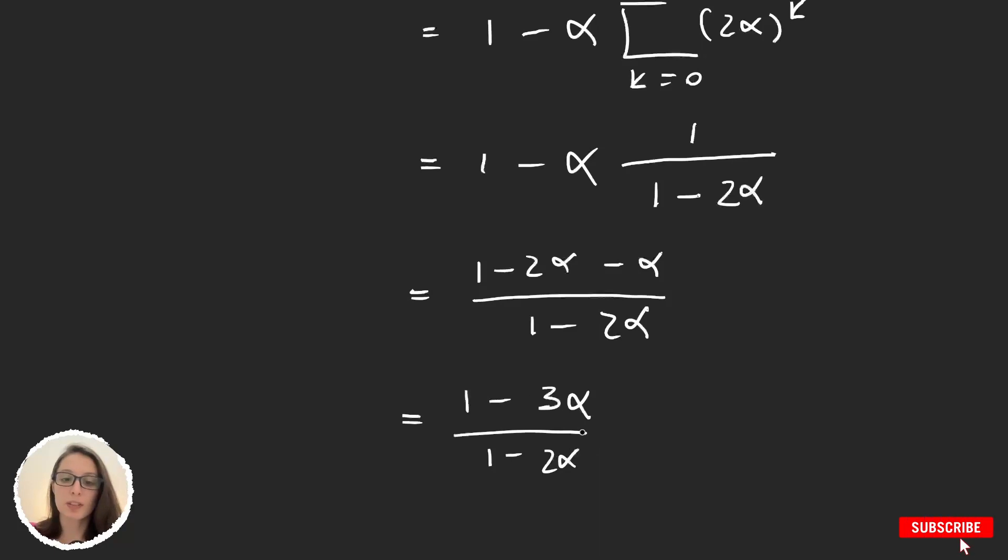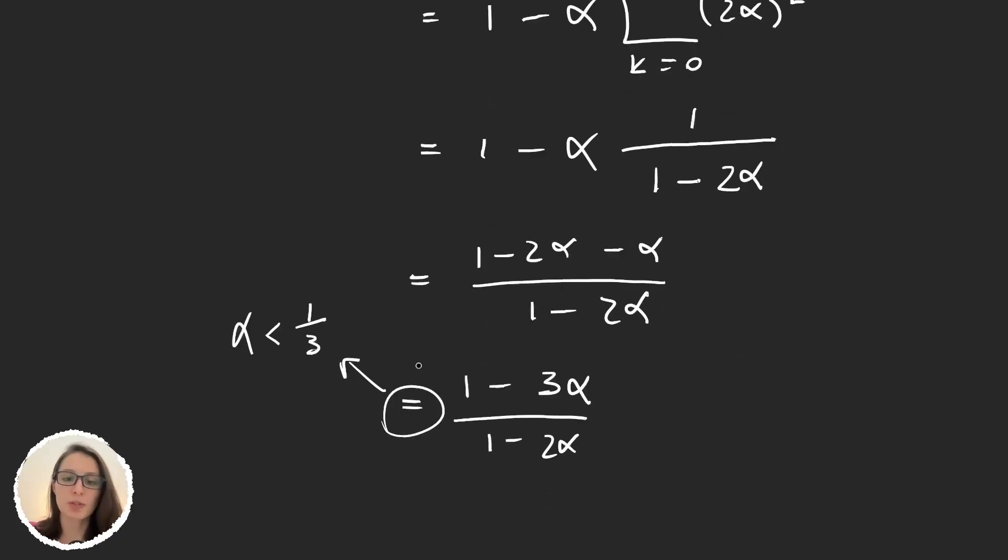Here if we want this to be positive then we need to ask α to be smaller than 1/3. So that's the restriction I said at the beginning of the video that we were going to have over α. So this will be the measure of F.